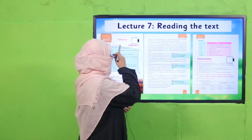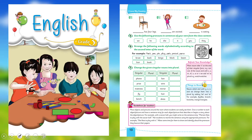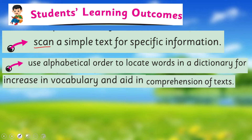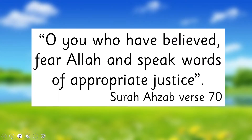My dear students, today we will continue reading and understanding the text. Before this, in English for Grade 3, I taught you to arrange words in alphabetical order. I hope you remember — if not, you can watch that video lecture again. We are going to extend the practice. We'll scan a simple text for specific information and use alphabetical order to locate words in a dictionary for increasing vocabulary and aid in comprehension. These are our today's SLOs.